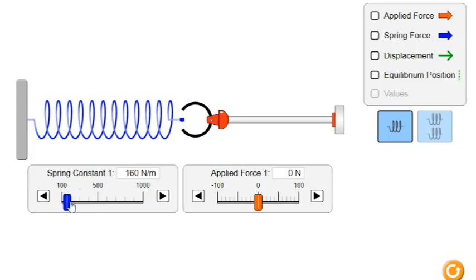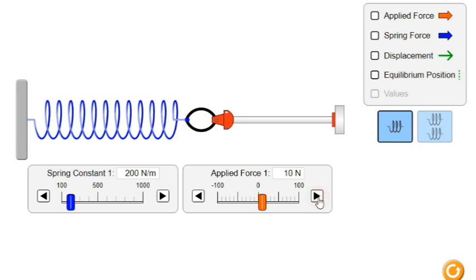Now, let's increase the spring constant to 200 N per meter and apply the same forces. As expected, the displacement of the spring is less than the previous spring.